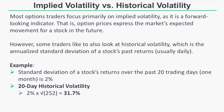Some traders also look at historical volatility, which is the annualized standard deviation of a stock's past returns. You take the standard deviation of a stock's past returns, usually over the past 20 trading days or one month, and multiply it by the square root of 252, which gives you an annualized standard deviation. For example, if the standard deviation of daily returns over 20 trading days is 2%, multiplying by the square root of 252 gives us 31.7% as our one-month historical volatility.